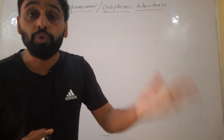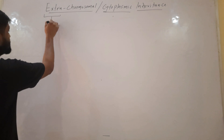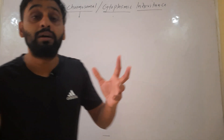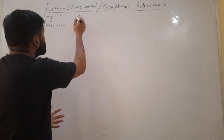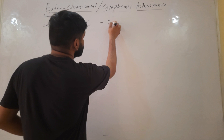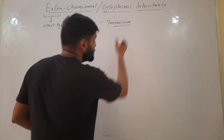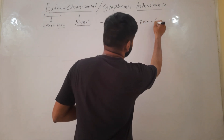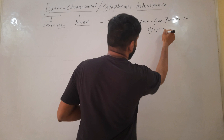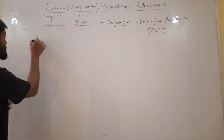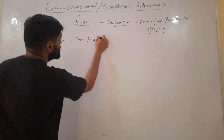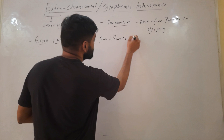Some types are also called extra nuclear inheritance. Extra means other than chromosomal. We know that our DNA is locked in chromosomes and these chromosomes are present in the nucleus. Inheritance means transmission of this DNA from parents to offspring. So how is extra DNA transferred from parents to offspring?